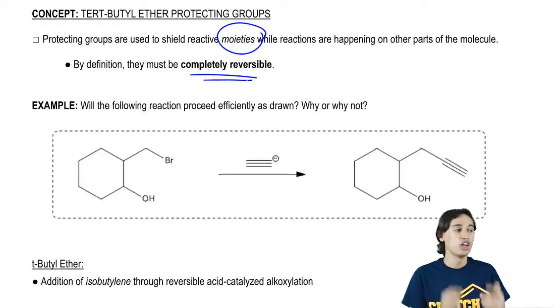The reason for that is that you're supposed to be able to take the molecule off after the reaction is complete. So if you're not able to regenerate that vulnerable functional group at the end, that's not really a great protecting group.